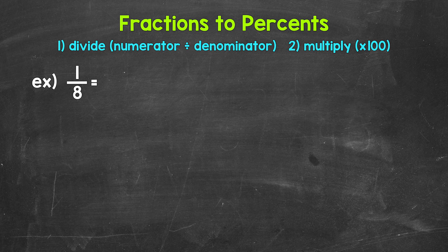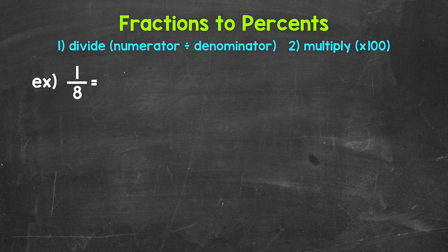Once we have that decimal, we convert it to a percent by multiplying it by 100. A quick way to multiply by 100 is to move the decimal twice to the right. So we need to start by converting this to a decimal by dividing.